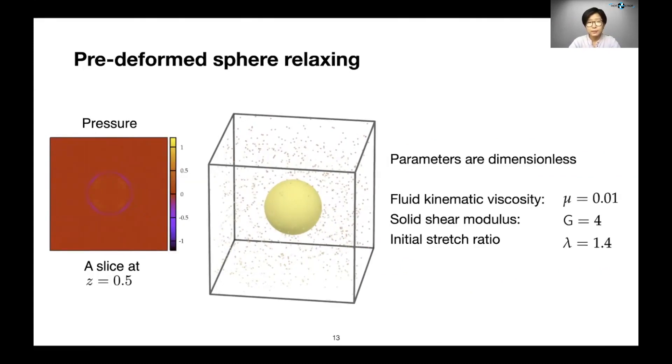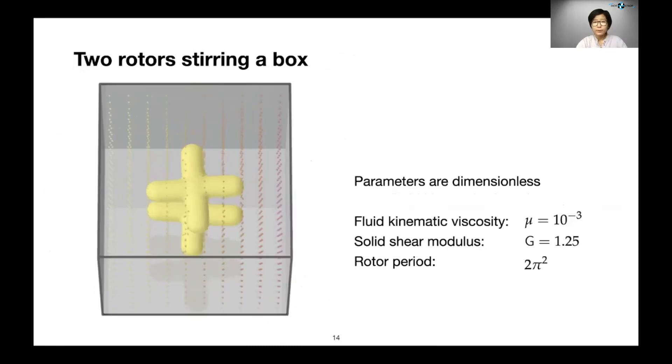And here, we have two soft rotors spinning in opposite directions, stirring fluids in a box. The fluid is not very viscous, so you can see some of the tracer particles are being flung off the structures.